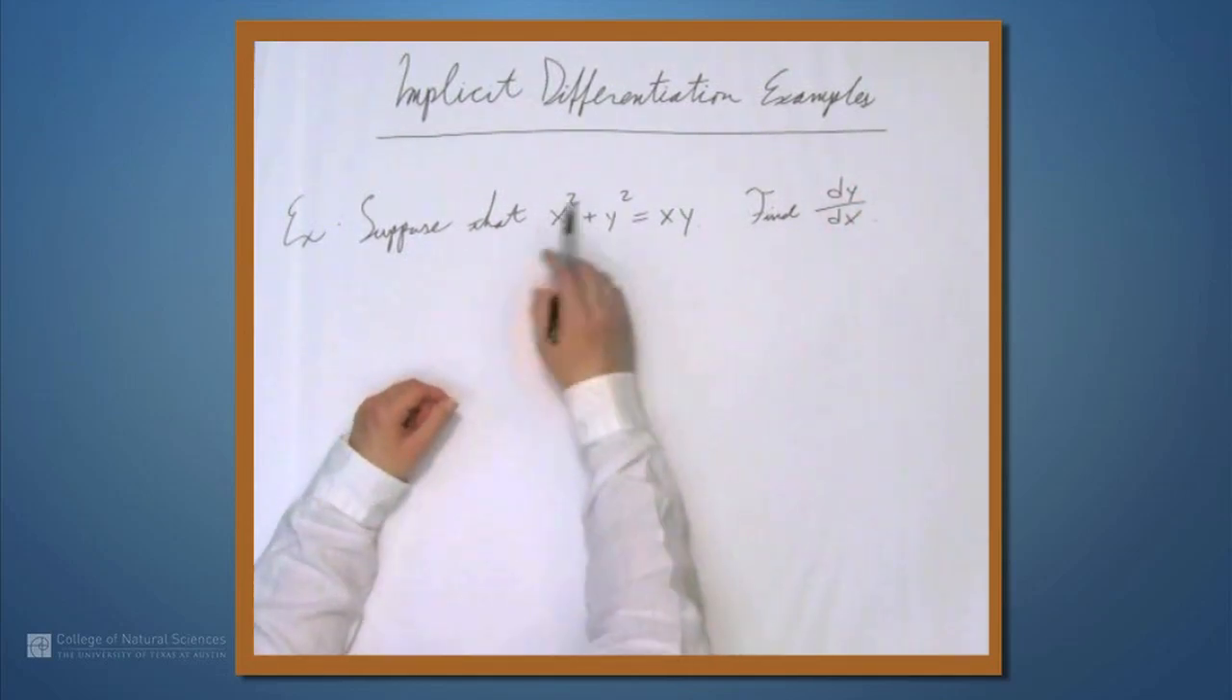Suppose that x² + y² = xy, and we want to find dy/dx. Usually when we want to find dy/dx, we've been given an equation of the form y = f(x), but what if we're not? If we're given something like this, we might not even be able to solve for y, or it might just be really difficult.